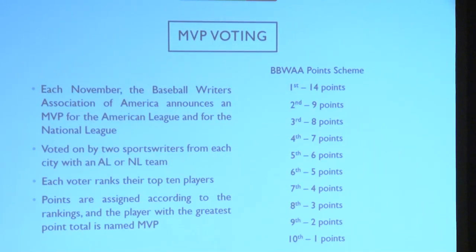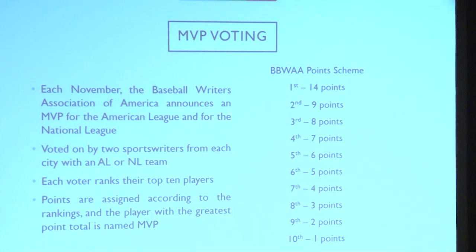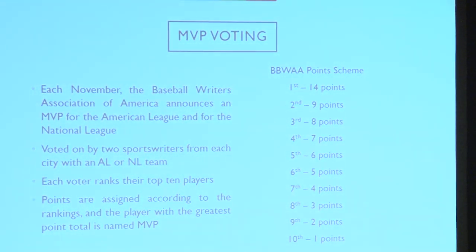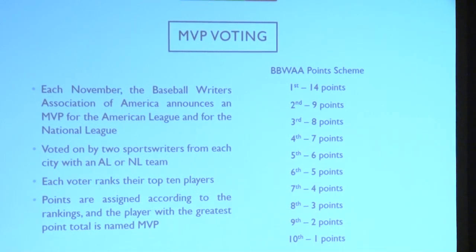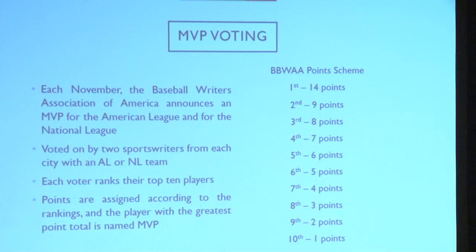So every November, the Baseball Writers Association of America announces an MVP — one for the American League, one for the National League. It's voted on by two sports writers from each city with an American League and National League team, so there are usually about 30 voters each year. It changes over the years as teams move from one league to the other.